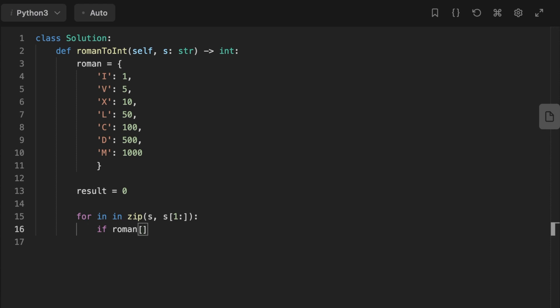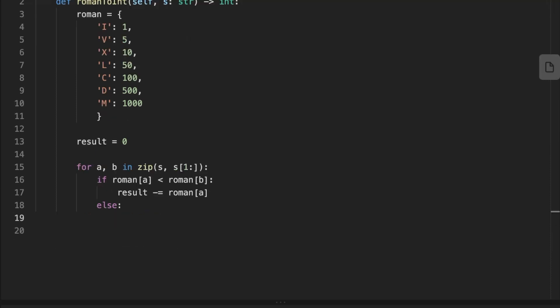Next, we set our conditional: if the current value is smaller than the next value, subtract the result by the current value. Otherwise, we add the current value to the result. And at the end, we return the result plus the last symbol value.